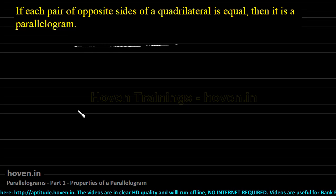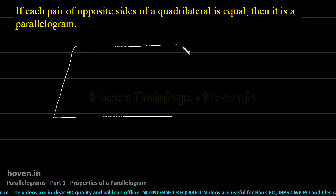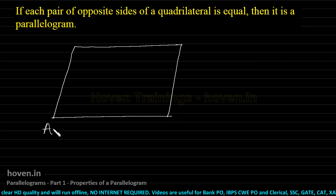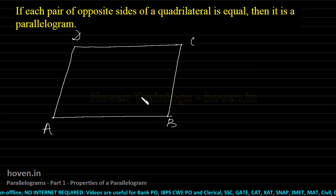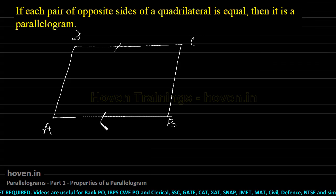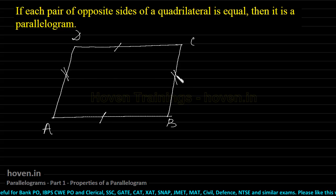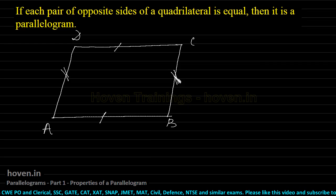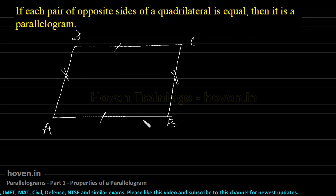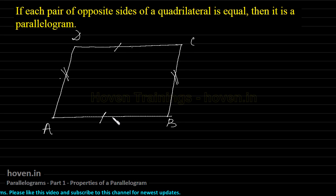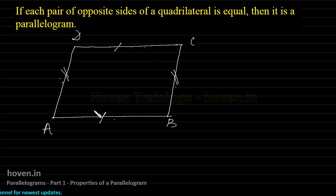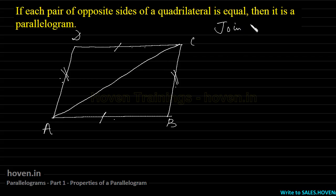We have been given a quadrilateral, which we can label as ABCD. We have been given that the length of CD is equal to the length of AB, and the length of AD is equal to the length of BC. But we have not been given whether the sides are parallel. We have to prove that this quadrilateral will be a parallelogram — that if this side is equal to this and this is equal to this, then this side will be parallel to this and this side will be parallel to this. To prove this, let us join A to C.